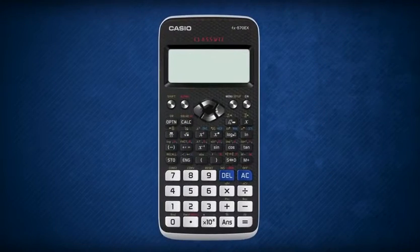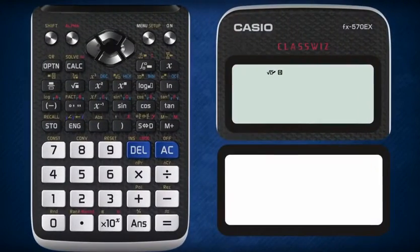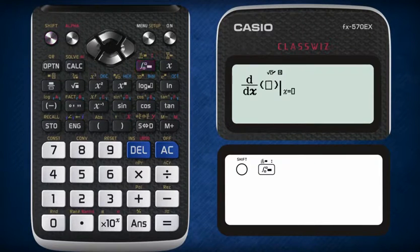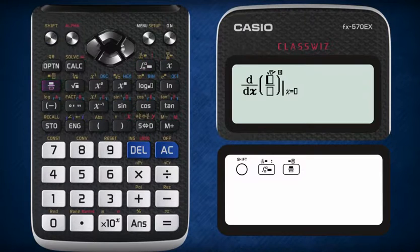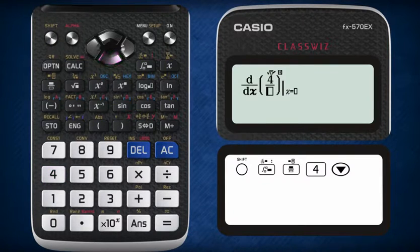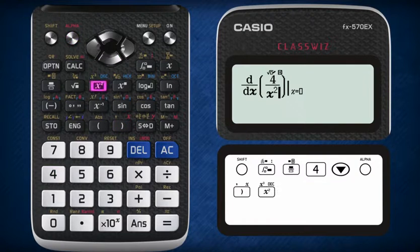Now to check your answer, let's use the all-new Casio ClassWiz. Press shift and the integration button, insert the fraction space by pressing the fraction button, move cursor to the numerator and insert 4, then move cursor to the denominator and press alpha, close bracket, and the square button, followed by plus 1.